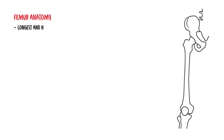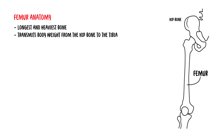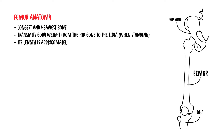The femur is the longest and heaviest bone in the body. It transmits body weight from the hip bone to the tibia when the person is standing. Its length is approximately a quarter of the person's height.